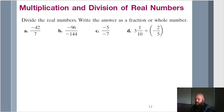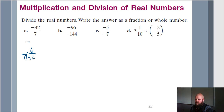Our first division problem: negative 42 over 7. We have a negative on top and a positive below — different signs — so we get a negative value. 42 divided by 7 is 6, so the answer is negative 6. Don't forget that negative.